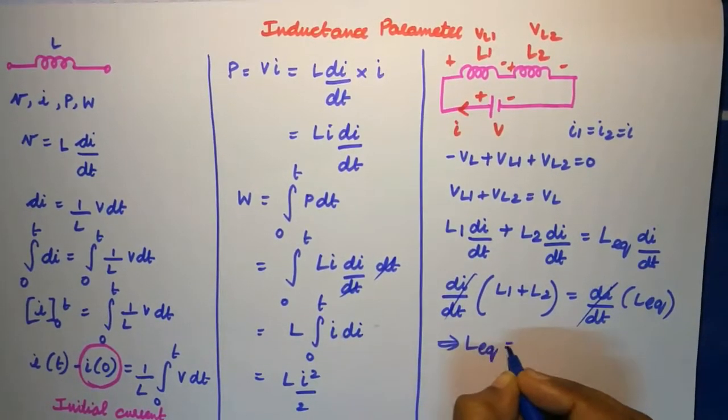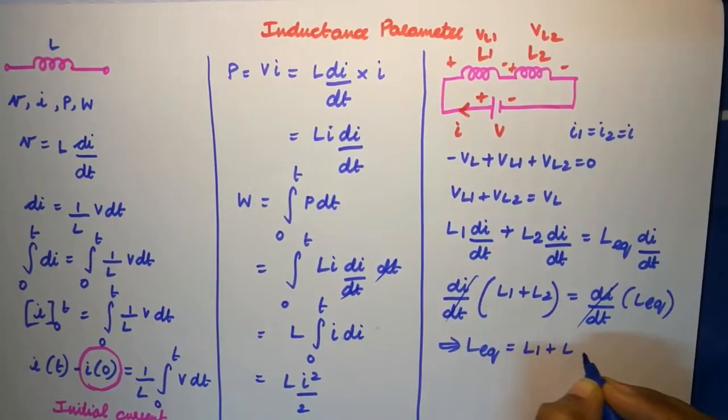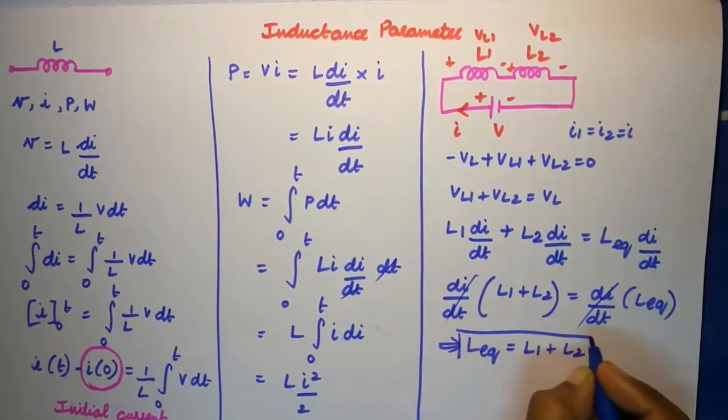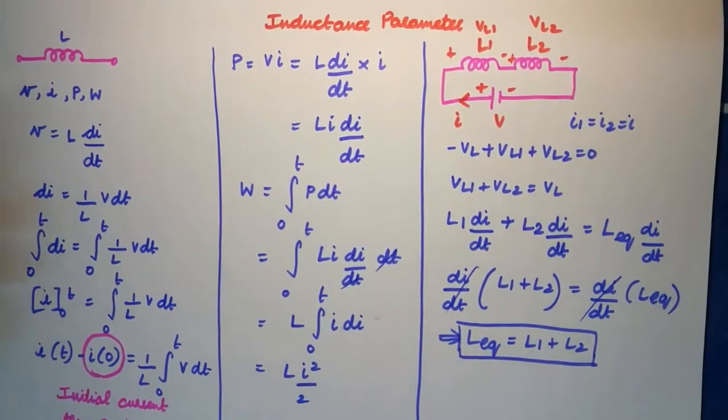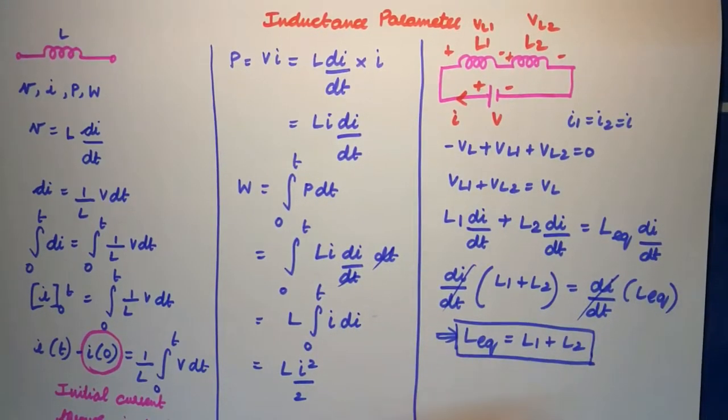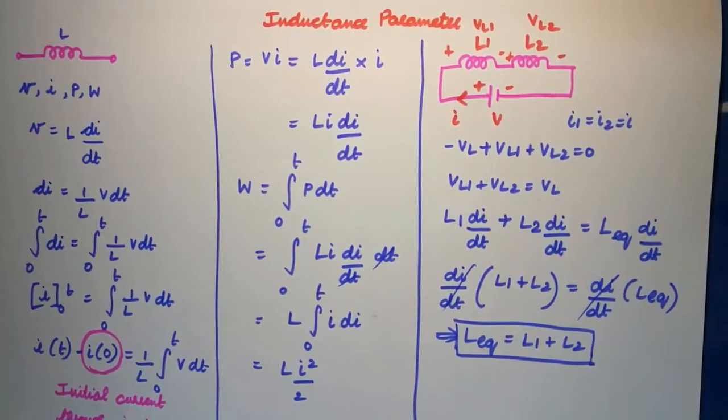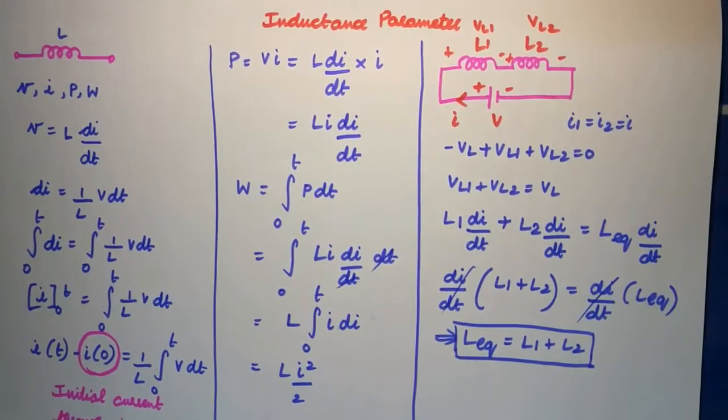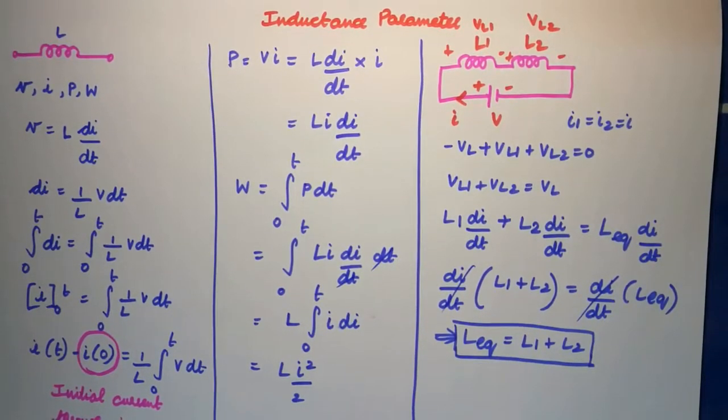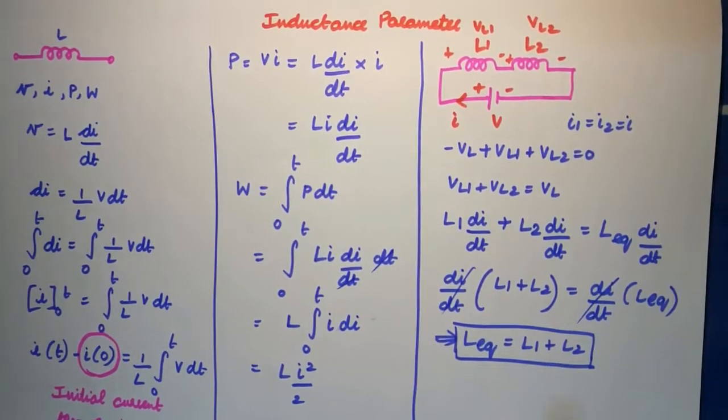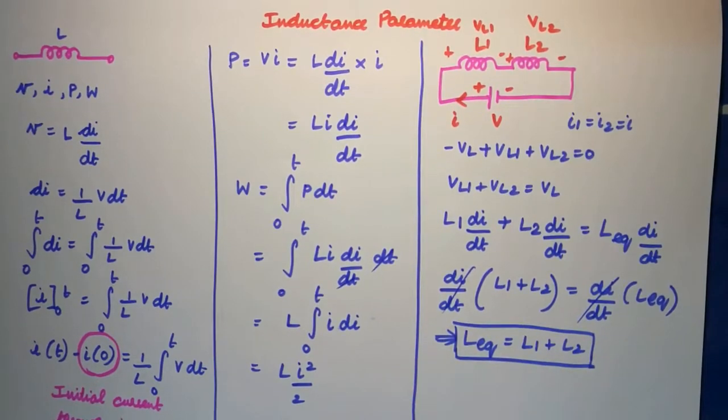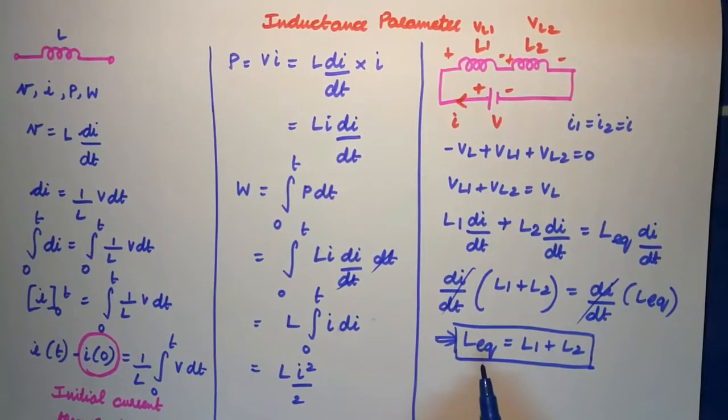L equivalent is nothing but the sum of the two series inductances connected. So just like how we obtained an expression for resistors in series, we can conclude that even for inductors in series it's going to be just the sum of the two inductors which is going to be the equivalent value of my inductor.